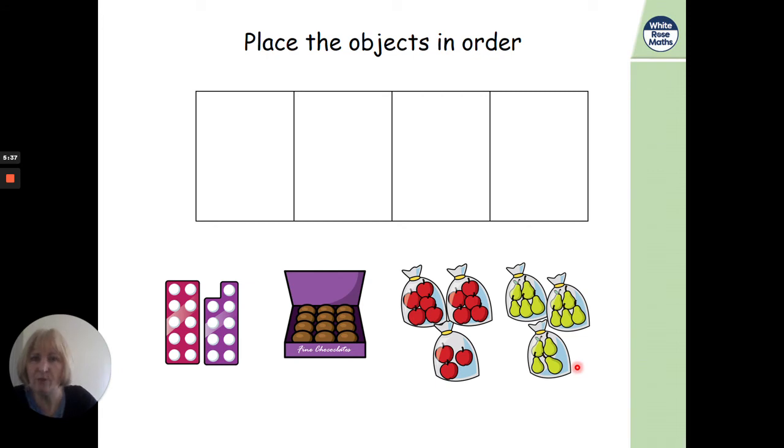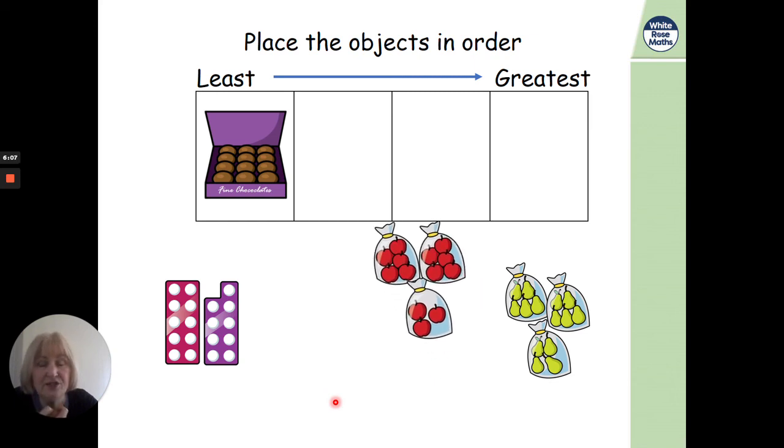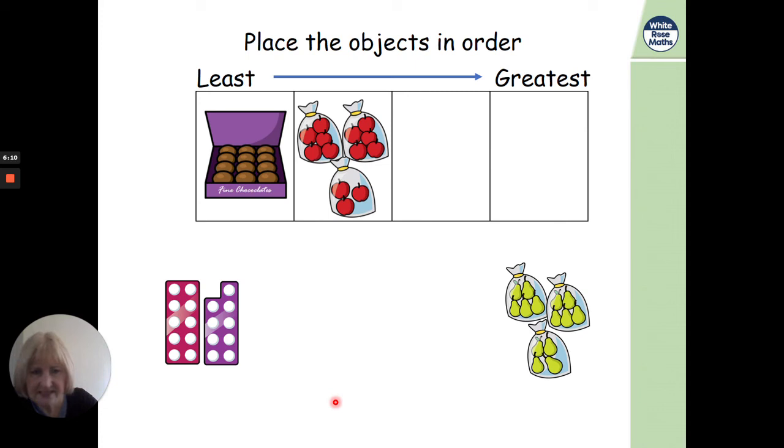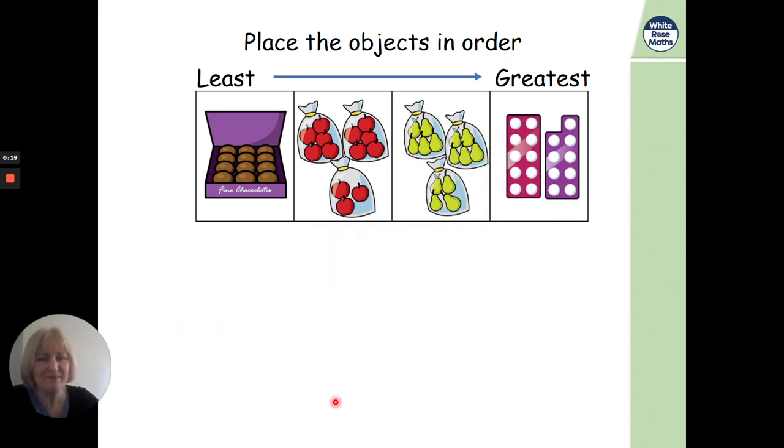It says place the objects in order from the least, that's the smallest amount, to the greatest amount. Okay. So which of these things have the smallest amount? 19, 12, 13 and 14. I think it's the chocolates. Do you? 12. Yes. And then the next least, apples. Well done. And the next least, yeah, pears. And the greatest was 19 for the Numicon shapes. Well done.